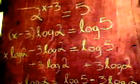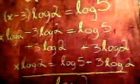Now we must try to get the x all by itself. Therefore we will add 3 log of 2 to log of 5, canceling it out on the other side, leaving us with x log of 2 equals log of 5 plus 3 log of 2.